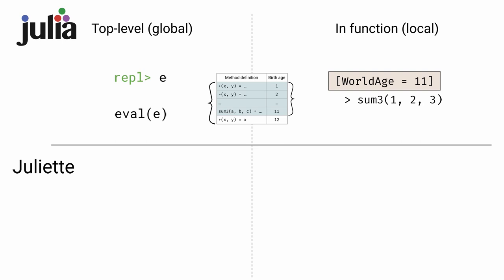In Juliet, top-level expressions are contained within a global evaluation construct. Function calls within this construct can dispatch to any method in the global method table. Note that unlike Julia, Juliet does not need to keep track of the birth age of methods.